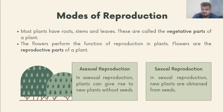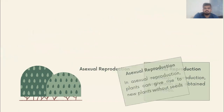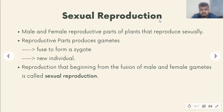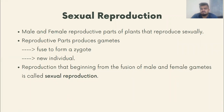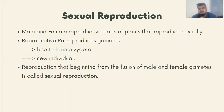Now let's go to topic 9.2 — Sexual Reproduction — from the textbook. The definition is: reproduction that begins from the fusion of male and female gametes is called sexual reproduction. The male and female reproductive parts produce gametes, these gametes fuse to form a zygote, and this zygote develops into a new individual. Whichever type of reproduction follows this process is called sexual reproduction.